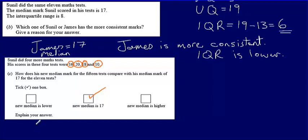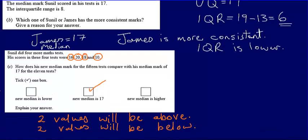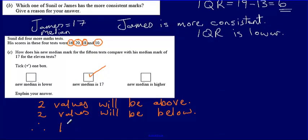My new median is 17. Two values will be above and two values will be below, and therefore 17 will still be in the middle. So 17 is still the median.